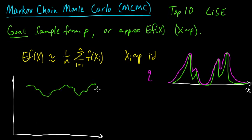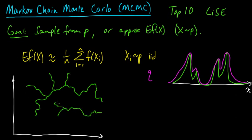We have a region of high probability P — sort of this wispy kind of region, a subset of this very high-dimensional space. The idea of Markov Chain Monte Carlo is that you want to be sampling from this very small subset of this high-dimensional region.